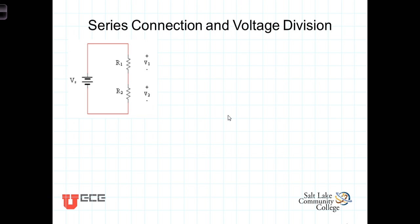In this video, we're going to continue our discussion of series-connected resistors and look at how the total voltage Vs is allocated across each of these two resistors. We'll see that it depends upon the relative size of those resistors.